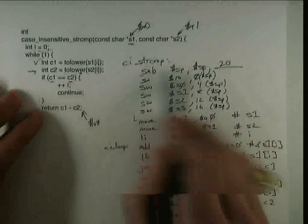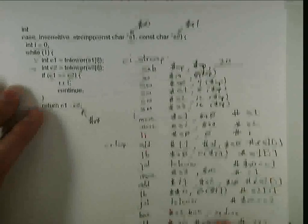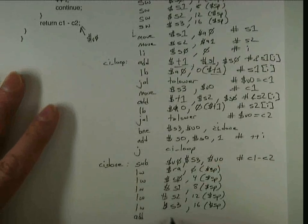And then I need to remove the stack frame, which is the opposite of this thing. Instead of subtracting 20 from the stack pointer, I'm going to add 20 to the stack pointer.